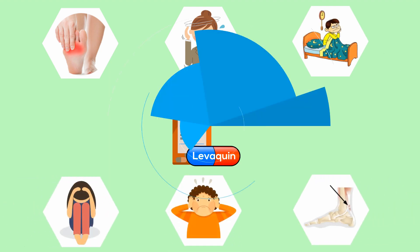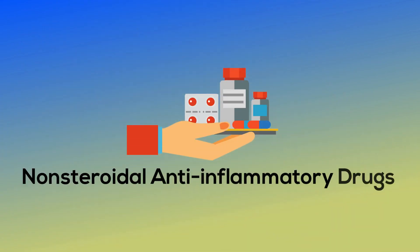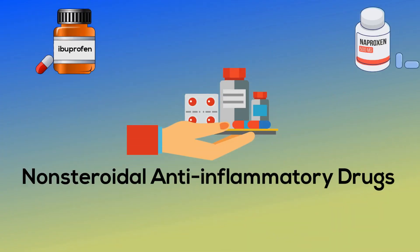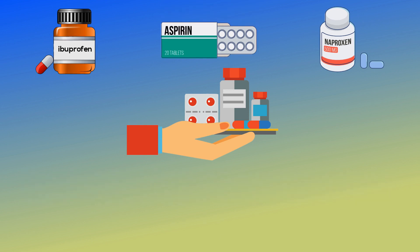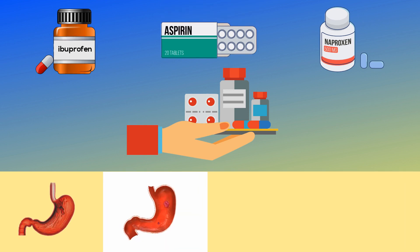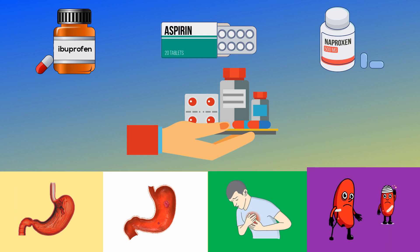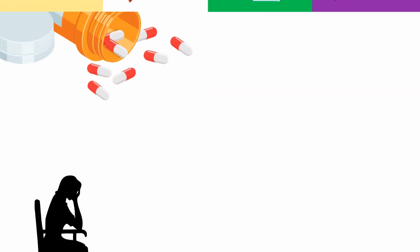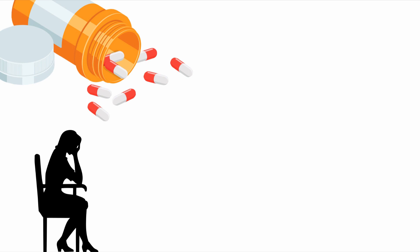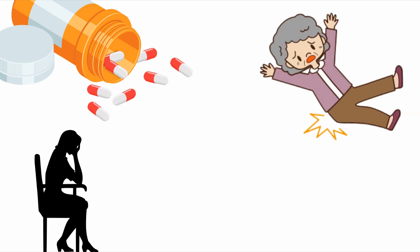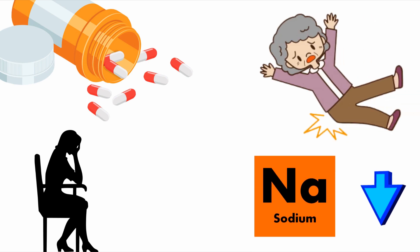Non-steroidal anti-inflammatory drugs such as ibuprofen, naproxen, and aspirin increase the risk of gastrointestinal bleeding, peptic ulcer disease, heart failure exacerbation, and kidney injury. Selective serotonin reuptake inhibitors antidepressants increase the risk of falls and low sodium, especially in the elderly taking a diuretic.